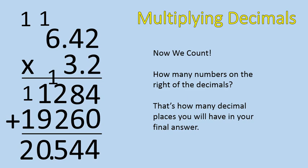So there's going to be 3 numbers on the right of my decimal in my final answer. That's it. So it's not 20,544. It's 20.544. All right? And that is how it's done.